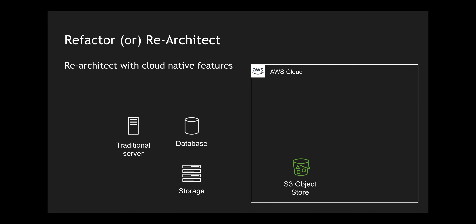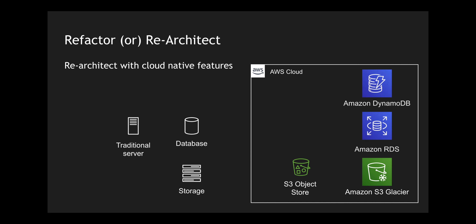In AWS, I can use S3 for storing files and Amazon S3 Glacier to archive those files and save cost. For databases, I'll use DynamoDB for storing metadata and Amazon RDS MySQL, Aurora, or PostgreSQL for database workloads — because I don't want to pay huge licensing costs for Oracle. For hosting my web services, I'll use Elastic Container Service with scalability and other integrated features within the AWS ecosystem.